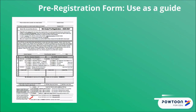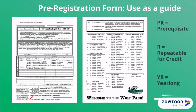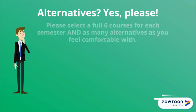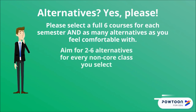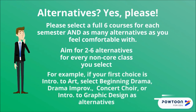You can use your pre-registration form to help guide you as you request classes for next year. On the back of this form it lists the classes that are open to ninth grade students. Remember: PR stands for prerequisite, R stands for repeatable for credit meaning you can take this class more than once, and YR stands for a course that is year-long. One final reminder: please select a full six courses for each semester and list as many alternatives as you are comfortable with. Most students will not receive all the courses that they request, so having a backup plan is important. Remember, more alternatives means less crying later.